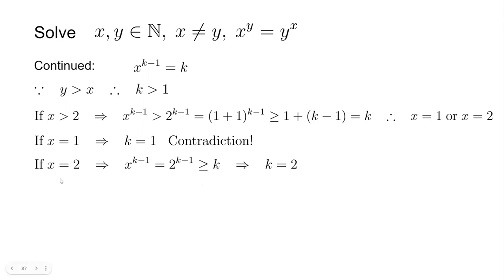Next, we look at x equals 2. This gives us x to the degree of k minus 1 equals 2 to the degree of k minus 1, which based on the previous proof is larger or equal to k, and the equality is obtained when k equals 2. So when x equals 2, k equals 2. This is a solution.